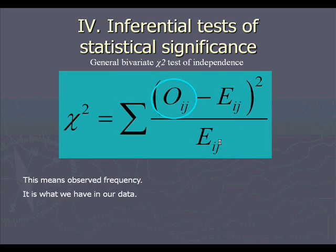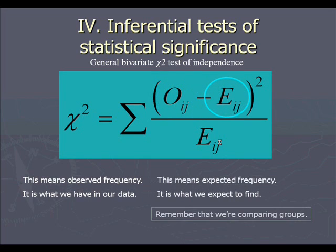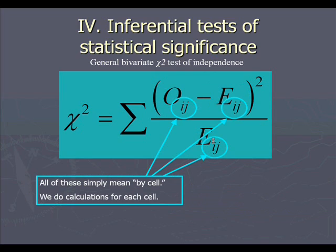Let's take apart the formula now. The o in the formula means the observed frequency. It's what we have in our data. And when we get to our example, we'll be able to take a closer look at that. The e represents our expected frequency. Remember, in the case of chi-square, we're always comparing observed values to expected values.